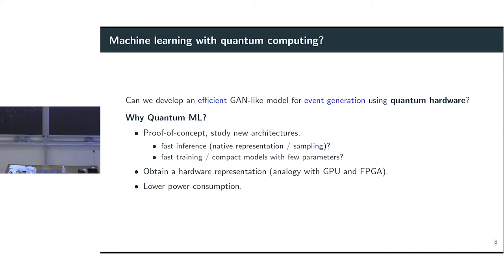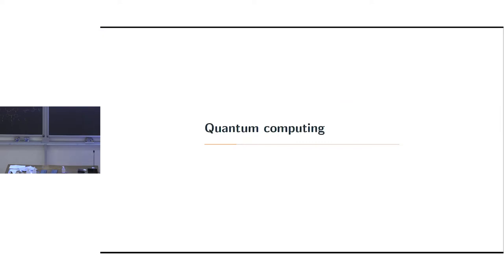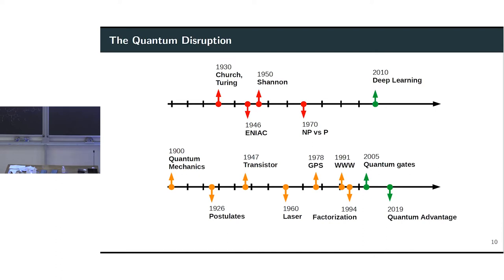Before going into the results, I want to talk quickly about quantum computing and motivate the idea of incorporating machine learning into quantum hardware. Looking at the timeline for classical computing: Church and Turing in the 1930s, ENIAC in 1946, Shannon in the 1950s, NP problems in the 1970s, and around 2010 the move towards deep learning. Many of these transitions are due to technology — in particular, better hardware and GPUs from around 2010.